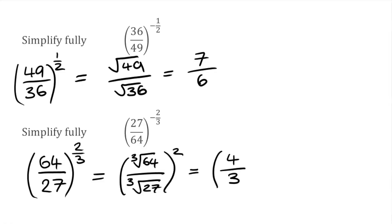We get 4 over 3, but then remember we have to square it. Squaring the fraction, we've got 4 squared, which is 16, and on the bottom we'd have 3 squared, which is 9. So our final answer to that one would be 16 over 9.